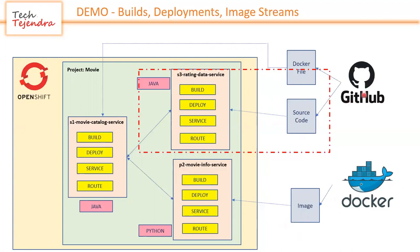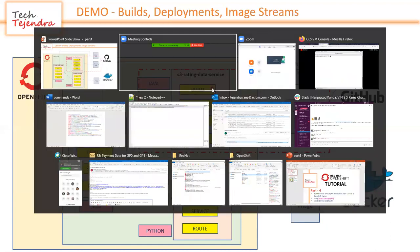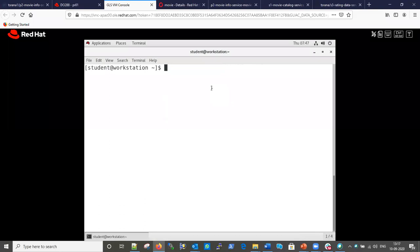In my GitHub I have all the source code for this S3 microservice. Once we run the command, it will first fetch all the source code and then deploy. Let me first execute the command because it will take time to run, and in the meantime we will discuss.